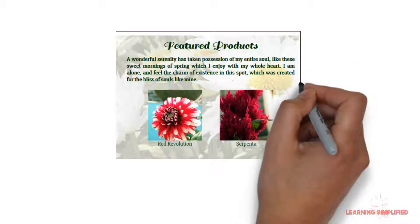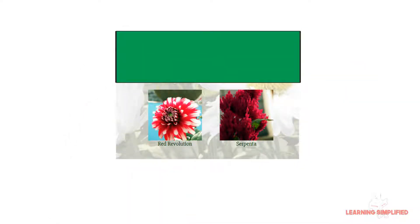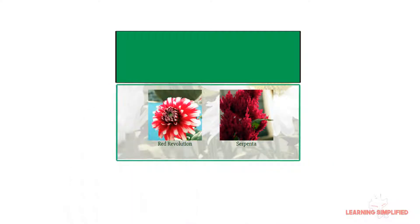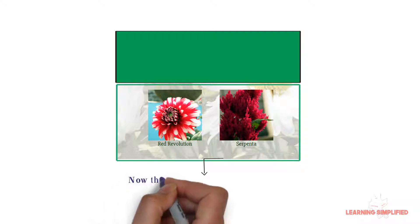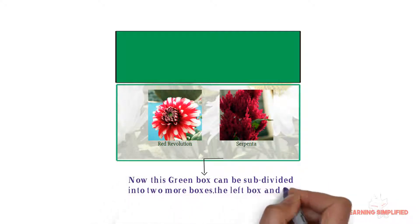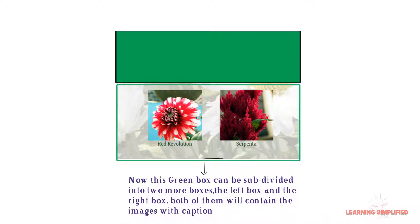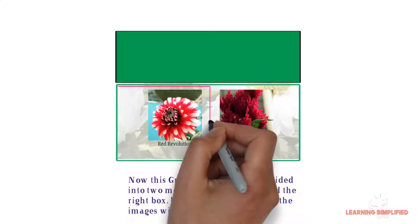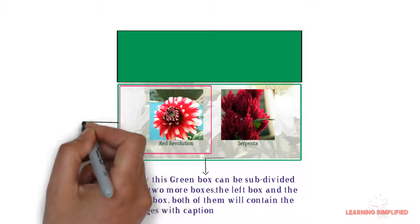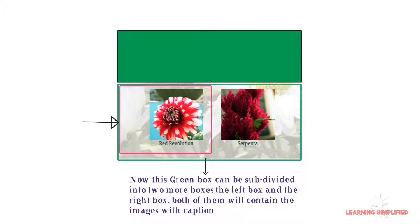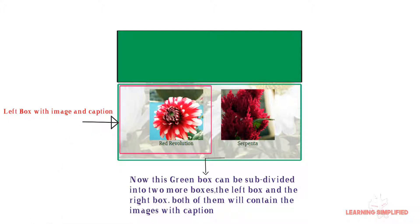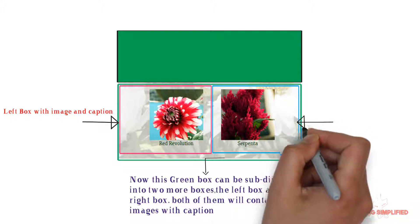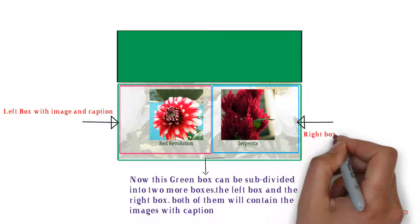Now let's black out the above two parts — the featured product and the paragraph part — and concentrate on this green box. It is further subdivided into two more boxes: the extreme left box and the extreme right box. Those will contain the images along with their captions. The first one is the extreme left box with the image and caption, and the extreme right box will hold the images and captions in a similar way.